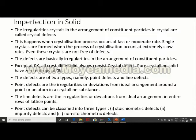Defects are of two types: point defects and line defects. Point defect means there is a defect at a point; line defect means a defect along an entire row of lattice points. There is also a plane defect where a whole plane is defected. Point defects can be classified into three types: stoichiometric defects, impurity defects, and non-stoichiometric defects.